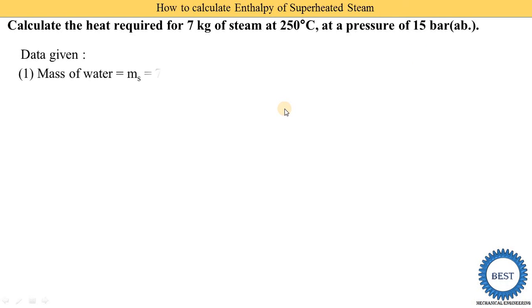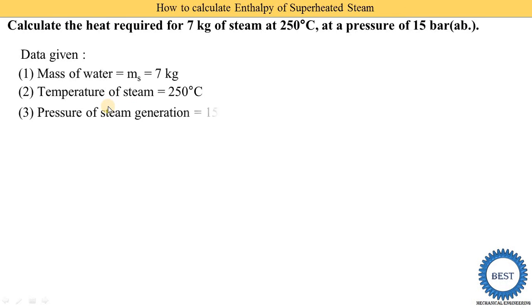So first we write down the given data. Mass of steam ms is equal to 7 kg. Temperature of the steam is 250 degrees centigrade. Pressure of steam generation is 15 bar.